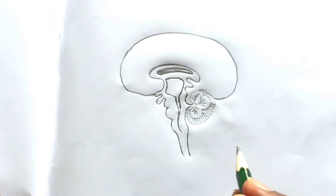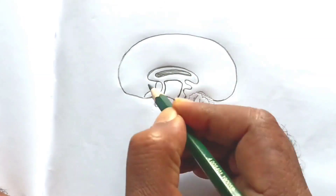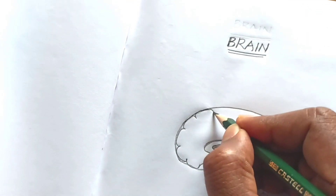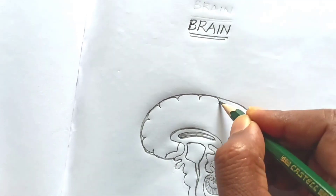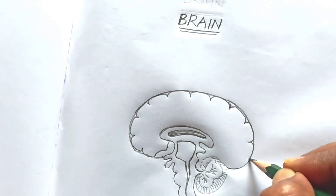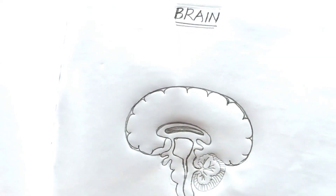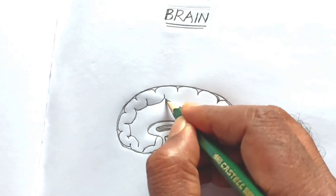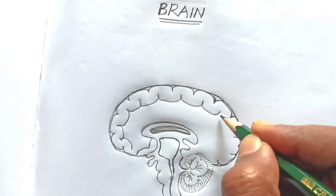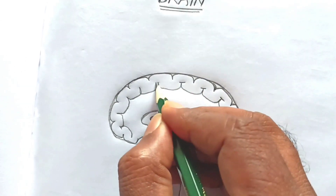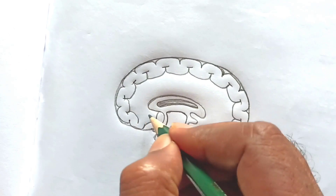Now I am going to draw some depressions and elevations in the cerebrum. The cerebrum contains some lobes. You draw like this — it is very easy to draw the gyri and sulci. These depressions and elevations are easy to draw.